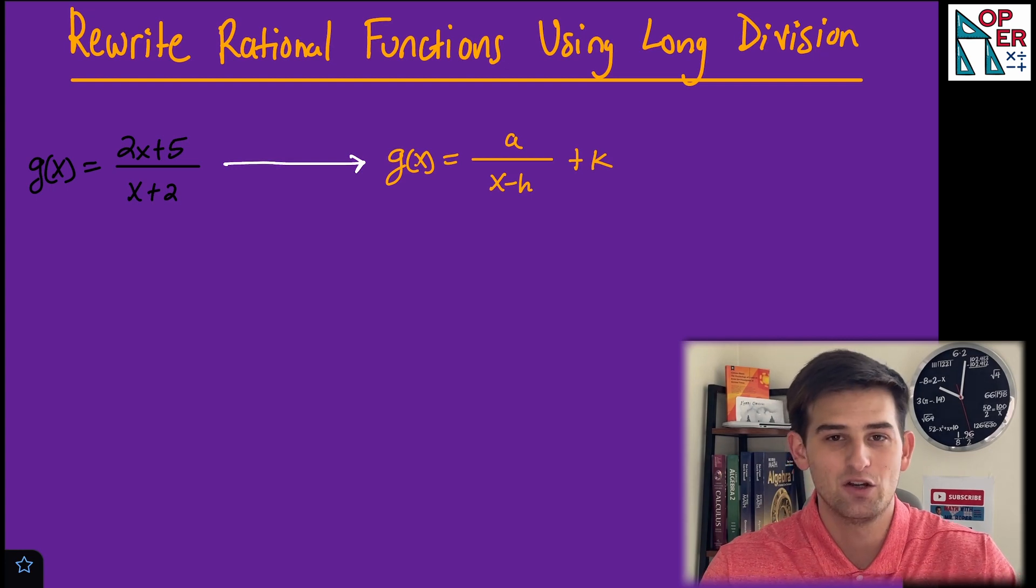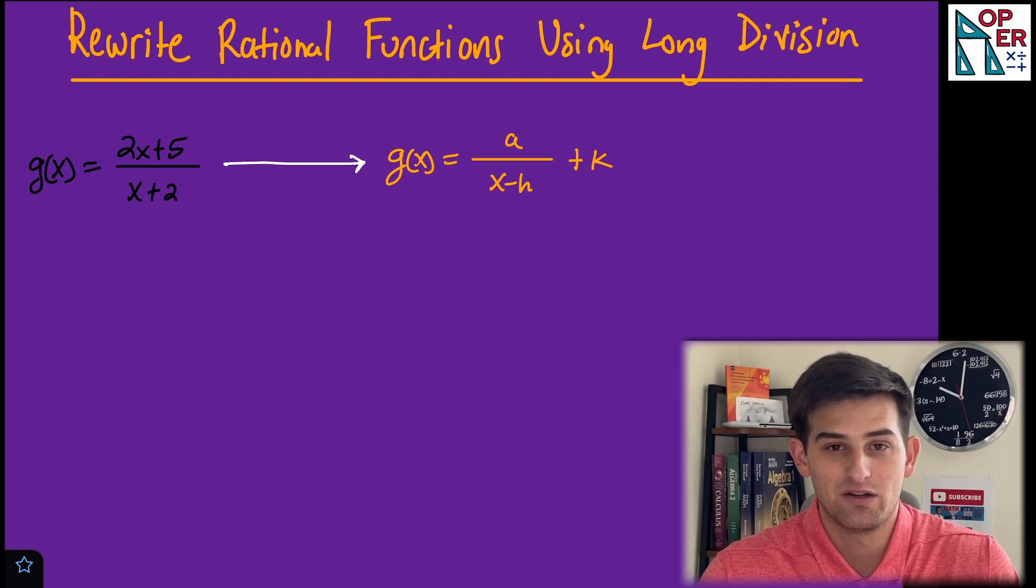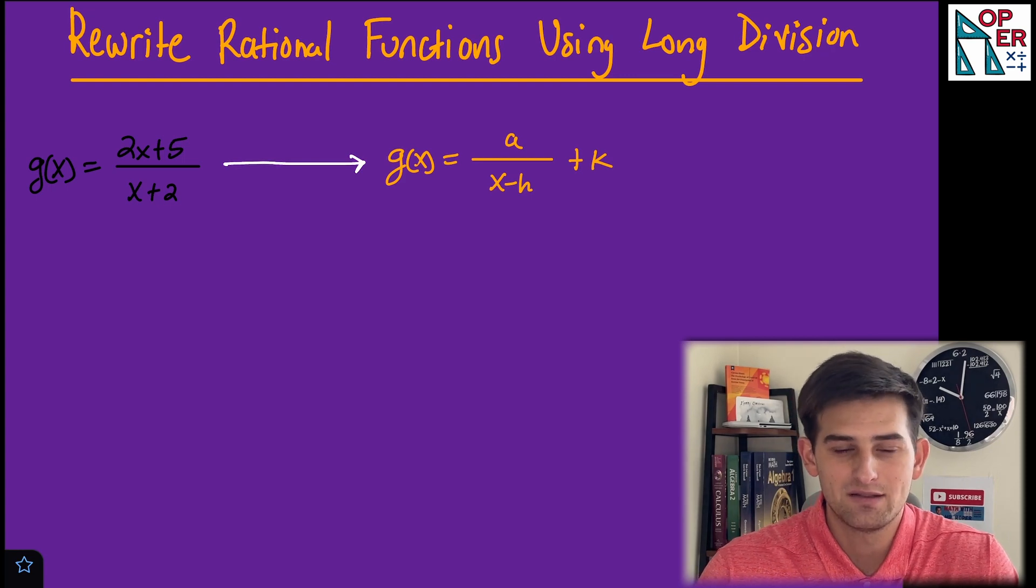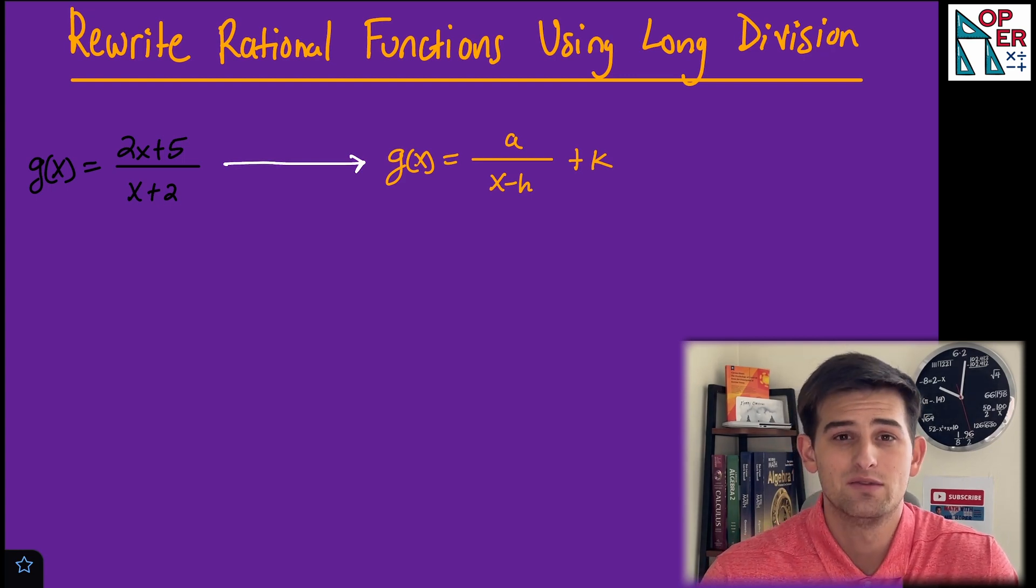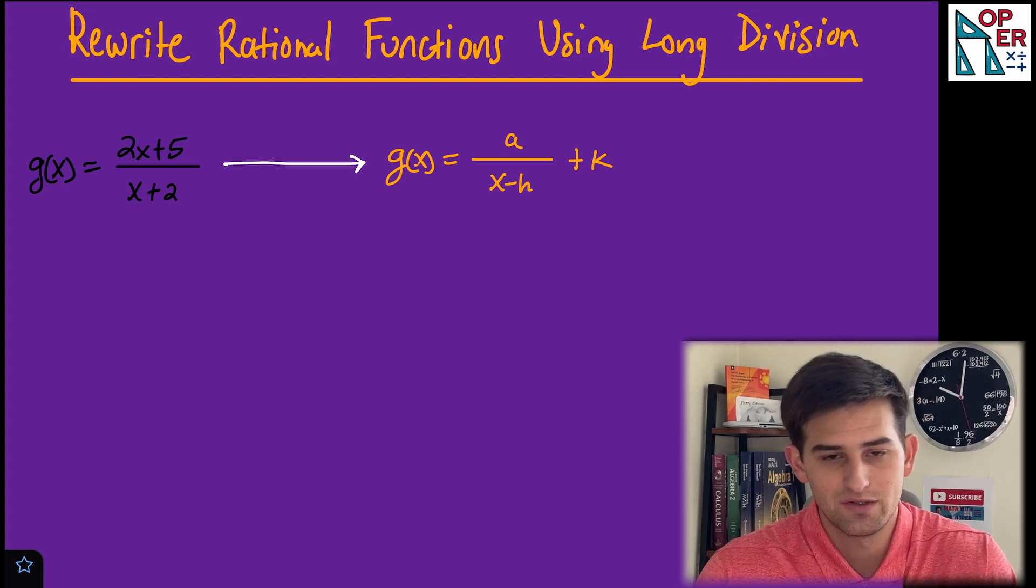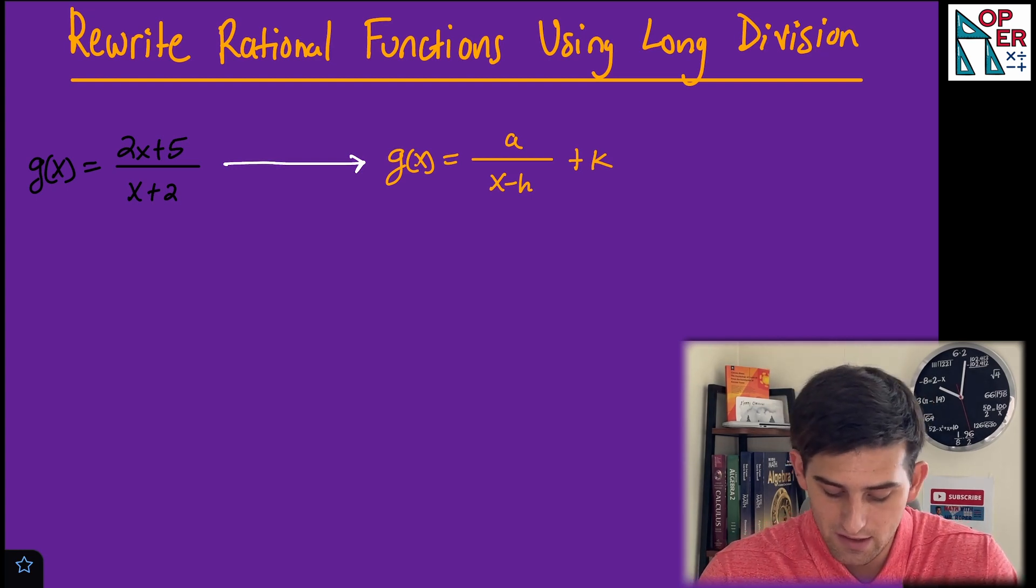The h and k values, hopefully familiar, tell us our horizontal and vertical translations. When we rewrite rational functions like this, it reveals the translations from our original parent function. It's kind of neat and gives us some properties about the function.